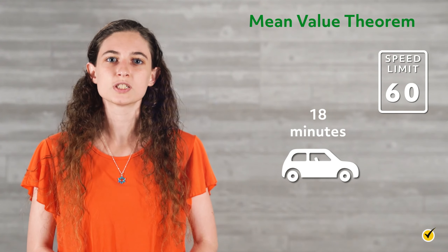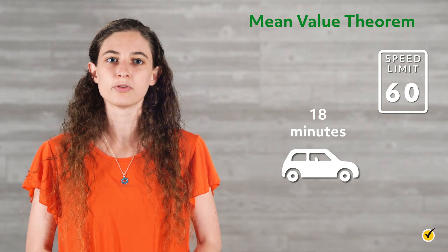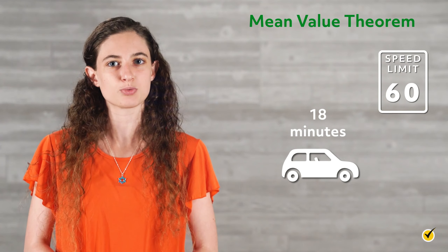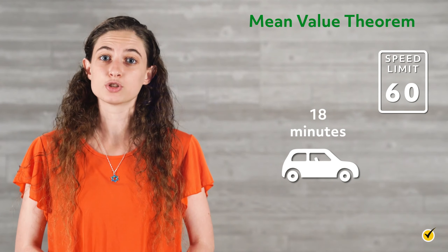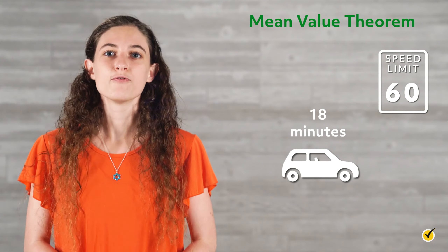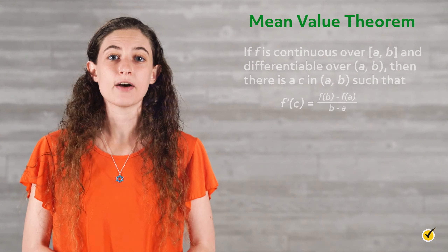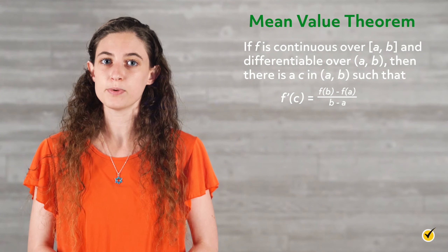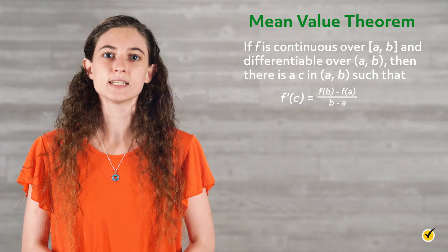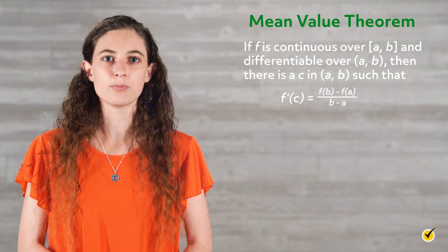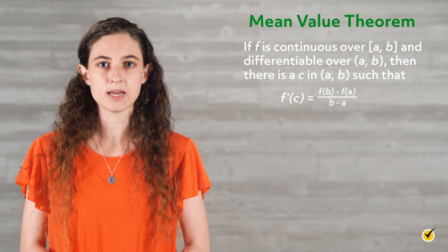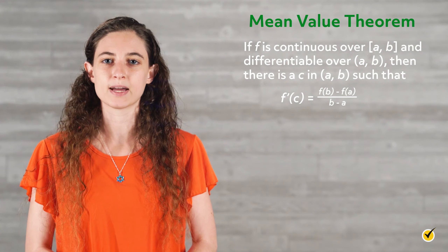The police officer applied the mean value theorem, which says for a continuous differentiable function over a closed interval, at some point the instantaneous rate of change equals the average rate of change over the interval. Formally stated, the theorem says: if f is continuous over the closed interval [a, b] and differentiable over the open interval (a, b), then there is a c in the open interval (a, b) such that f prime of c equals f of b minus f of a, over b minus a.